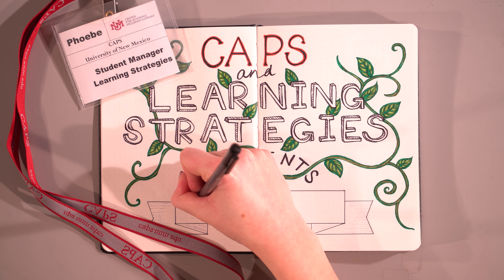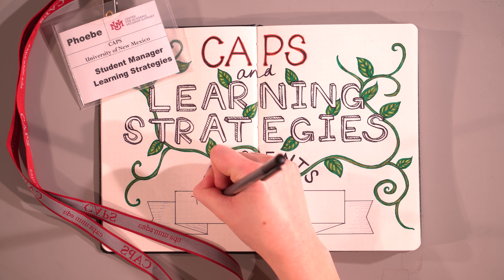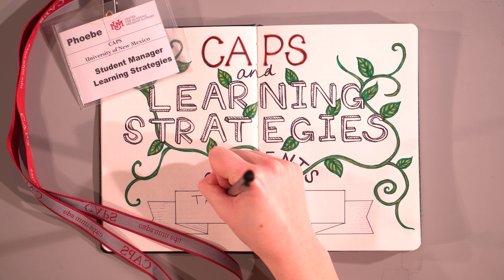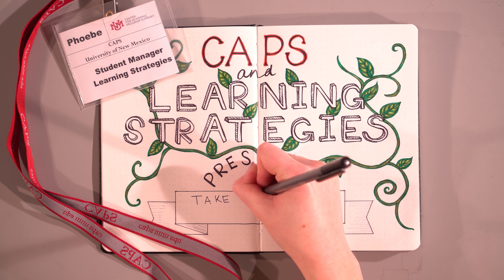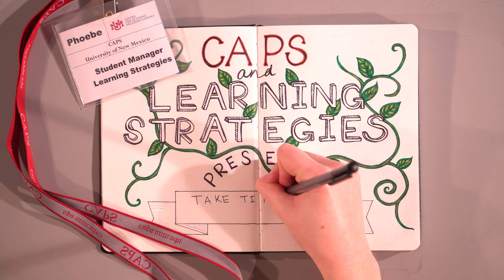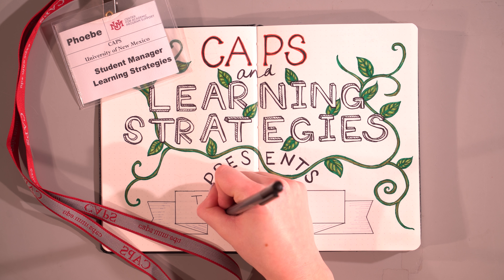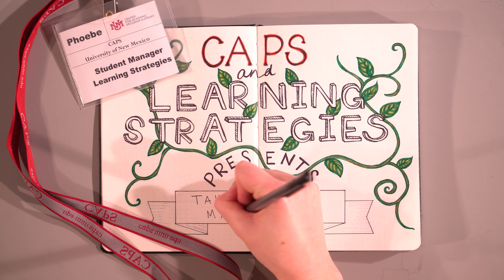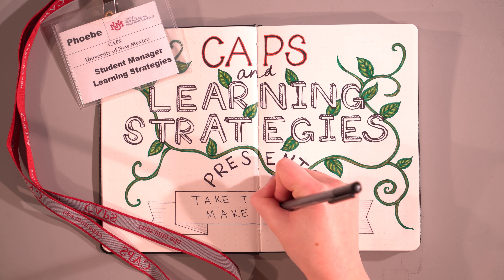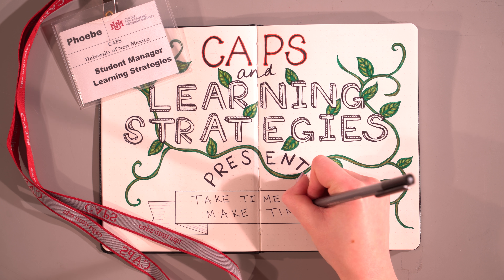Hi, welcome to CAPS. My name is Phoebe and today we're going to talk about how you can take time to make time. One of the ways you can do this is by creating a bullet journal. Bullet journals are a great way to write down your schedule, so we're going to go over a couple different formats that you can do today.